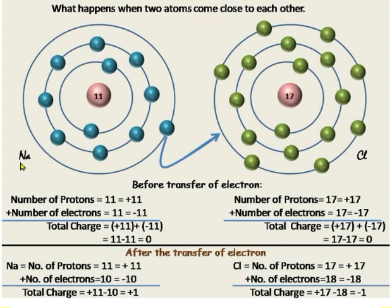Suppose this is an atom of sodium. The atomic number of sodium is 11, so 11 protons are in the nucleus and 11 electrons are in the orbit. This is an atom of chlorine. The atomic number of chlorine is 17, meaning 17 protons are inside the nucleus and 17 electrons in the orbit.